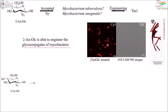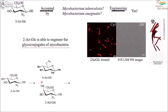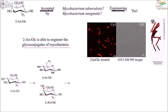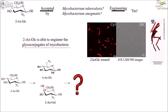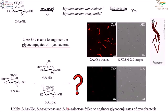Now what if we move the azido group to the sixth position, making it 6-azidoglucose, or move the fourth hydroxyl to the axial position, making it a galactose? Can it still engineer mycobacteria? The answer is no — both of these modifications fail to engineer mycobacteria.